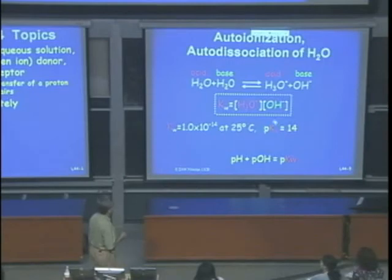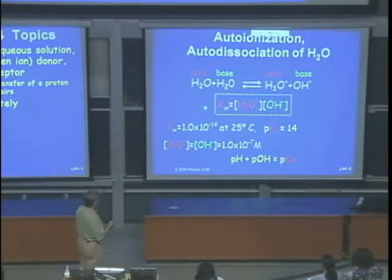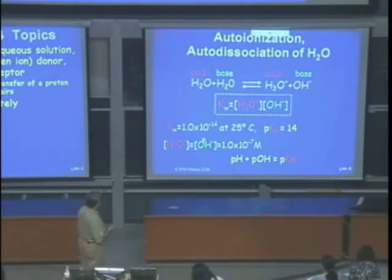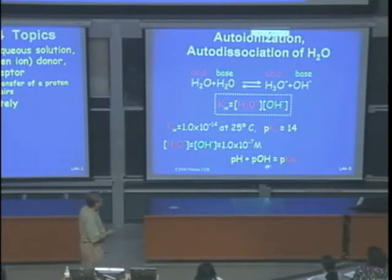Taking the negative log of Kw gives pKw = 14. Since pH + pOH = pKw = 14, and in pure water both equal 7, the pH is 7. For a 0.01 molar (10⁻²) sodium hydroxide solution: the pOH is 2, so pH = 14 − 2 = 12.